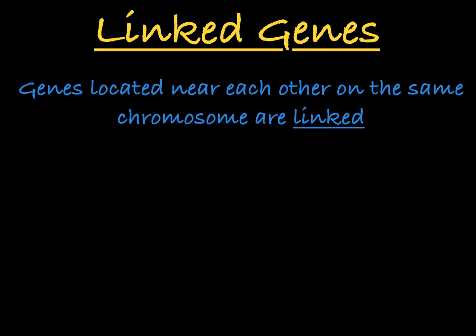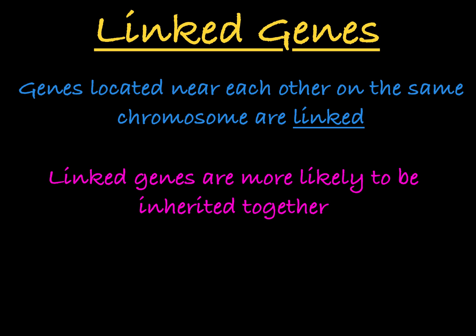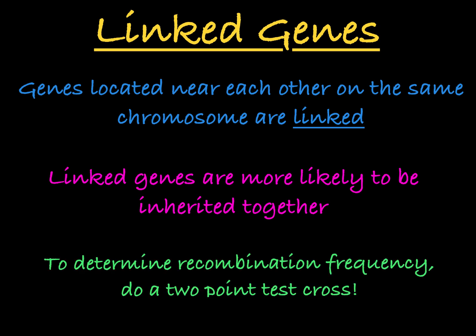So to sum it up, genes that are located near each other on the same chromosome are said to be linked, and they are more likely to be inherited together. If you'd like to learn how to determine the recombination frequency between two genes, check out my video on the two-point test cross.